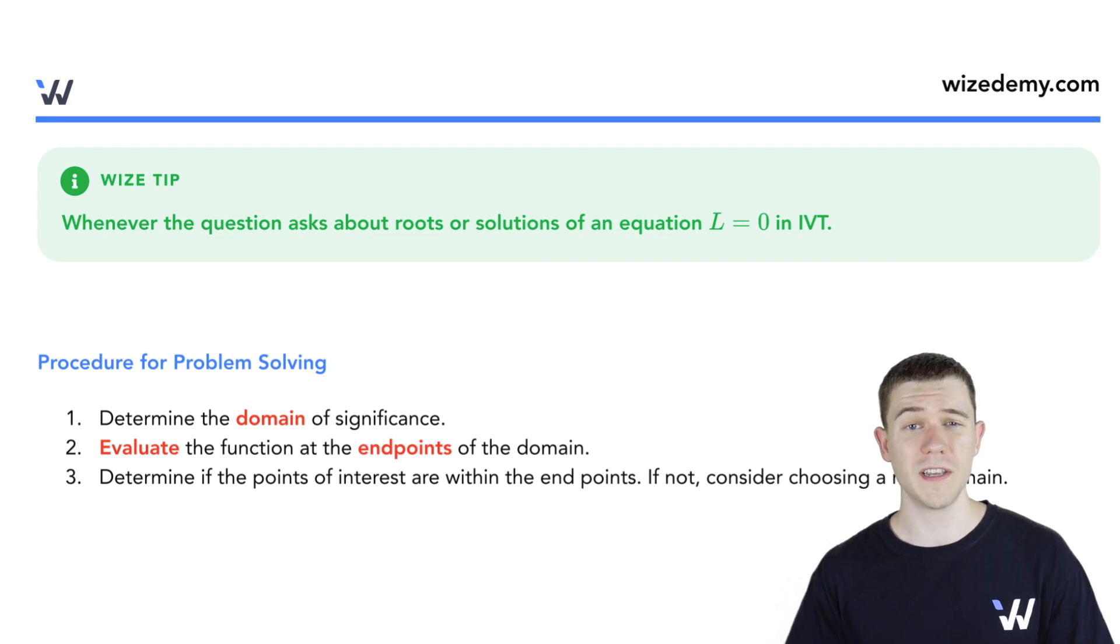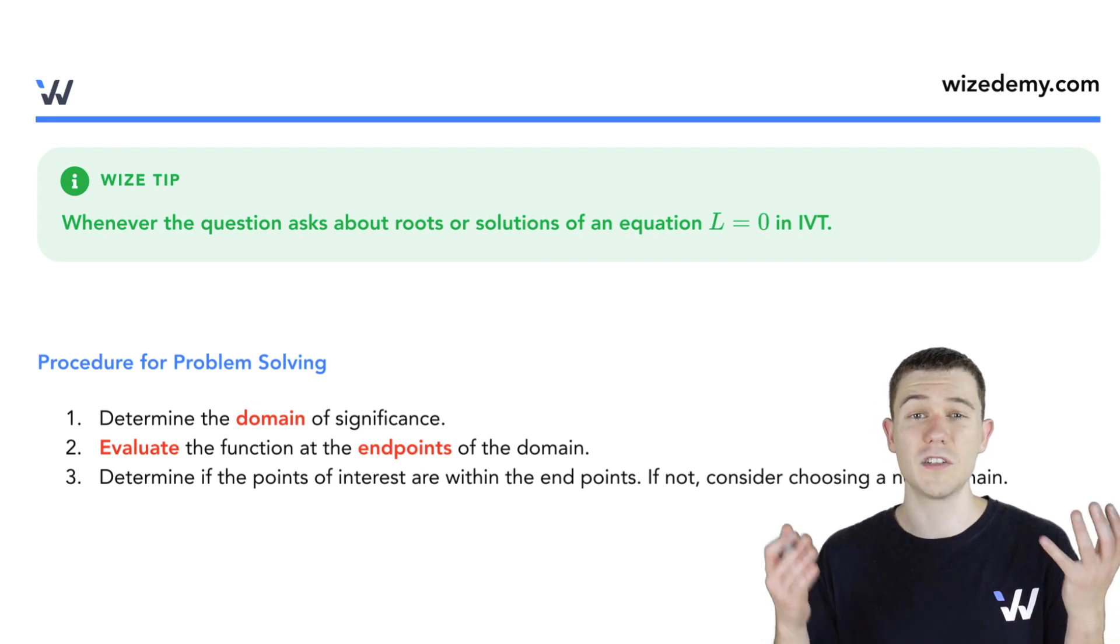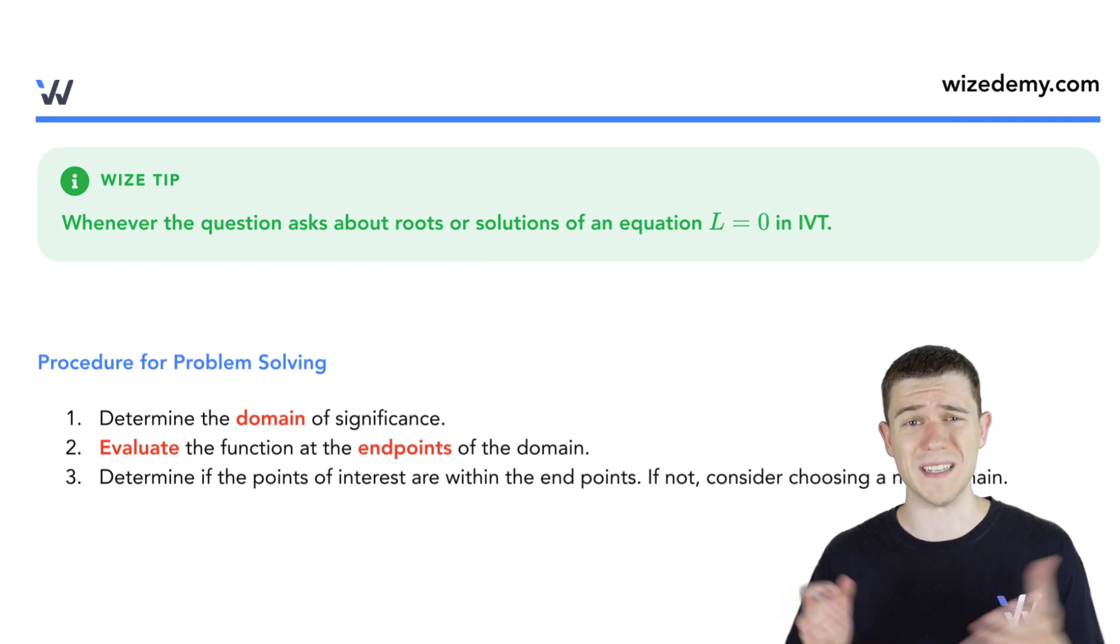Typically when you're asked questions on the intermediate value theorem, you're asked for roots or solutions. This is another word for saying set the function equal to zero.